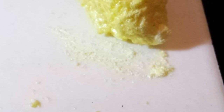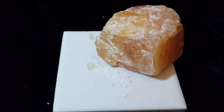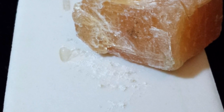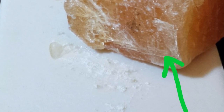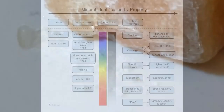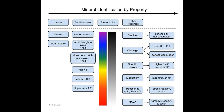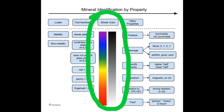This streak color is yellow, and it happens to be the same as the color of the bulk specimen. This streak color is white, which is different from the color of the bulk specimen. So we see that the color of the streak — the powder — is a better diagnostic test used in the identification of a mineral than the bulk color of the mineral specimen.